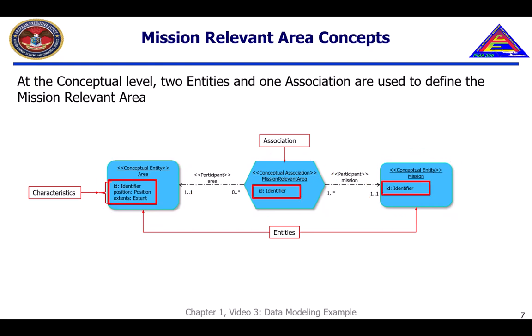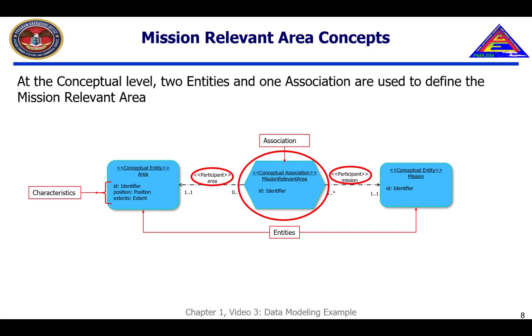Each entity and association has at least one characteristic, or ID, which is a unique identifier for the element. While no amplifying characteristics are added for mission, area is further defined to have a position and a bounding envelope or extent. The relationship between area and mission is defined by the association mission-relevant area. FACE associations can have two or more participants; mission and area are the two participants in this association.